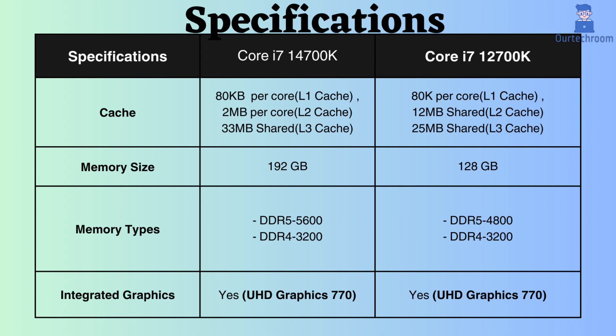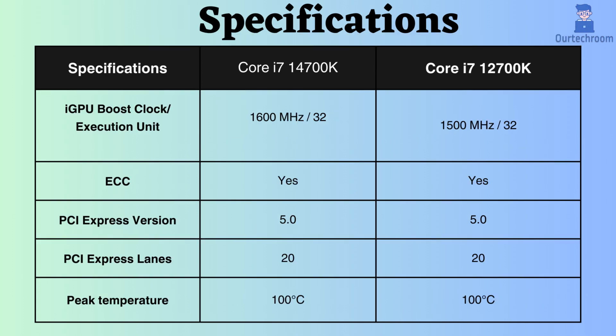Both processors, the Intel Core i7-14700K and the i7-12700K, are compatible with both DDR4 and DDR5. However, the 14700K supports a higher frequency for DDR5 compared to the i7-12700K. They both feature integrated graphics in the form of UHD Graphics 770. Nevertheless, the boost frequency of the integrated graphics for the Intel Core i7-14700K is 1600MHz, surpassing the Core i7-12700K's 1500MHz.